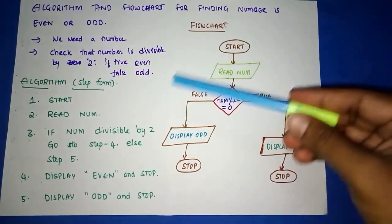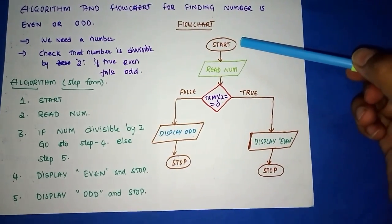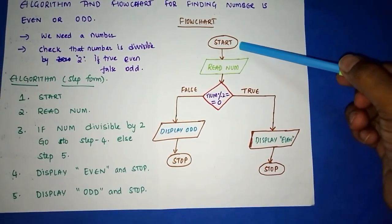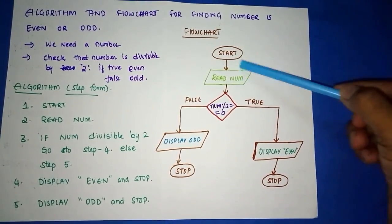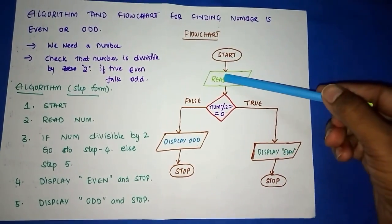Coming to the flowchart, we already know that START and STOP have ellipse shapes, and inputs and outputs have parallelogram shapes. This one, this one - input is read here, display output here.